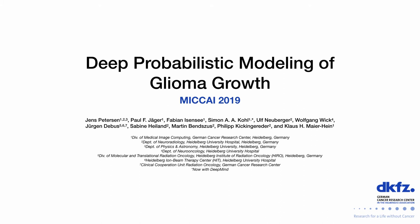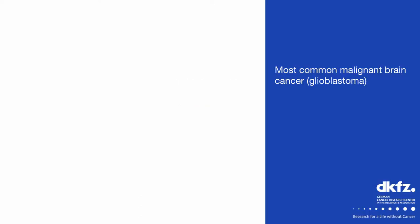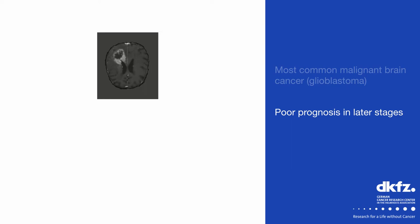This is a presentation of our paper 'Deep Probabilistic Modeling of Glioma Growth,' which was published at MICCAI 2019. Glioma, and especially its high-grade form glioblastoma, is the most common malignant brain cancer. It typically offers very poor prognosis for patients in its later stages, which is easy to understand when you see what an affected brain might look like.